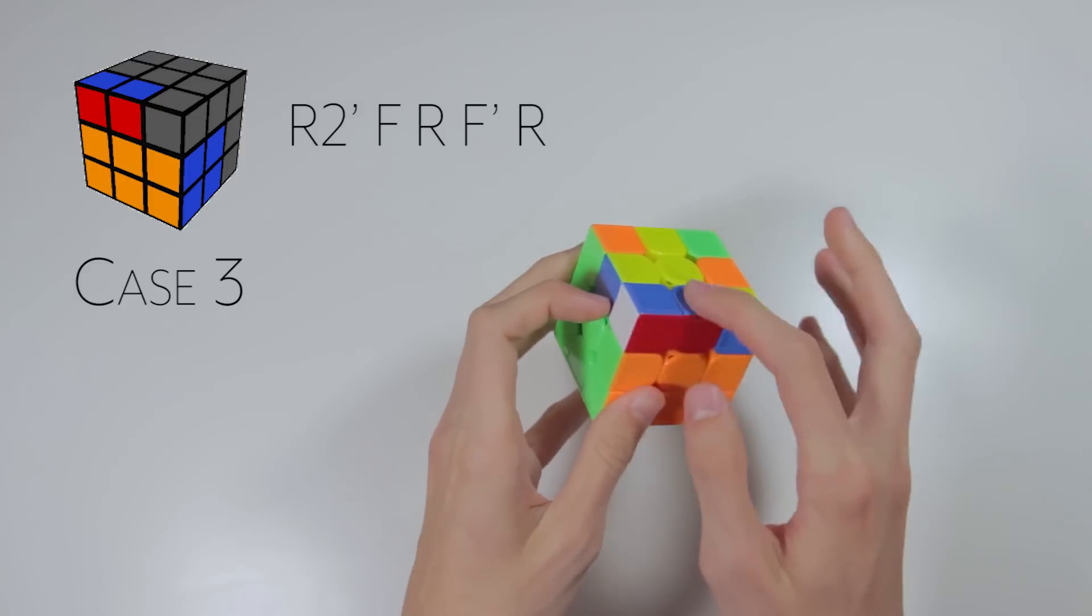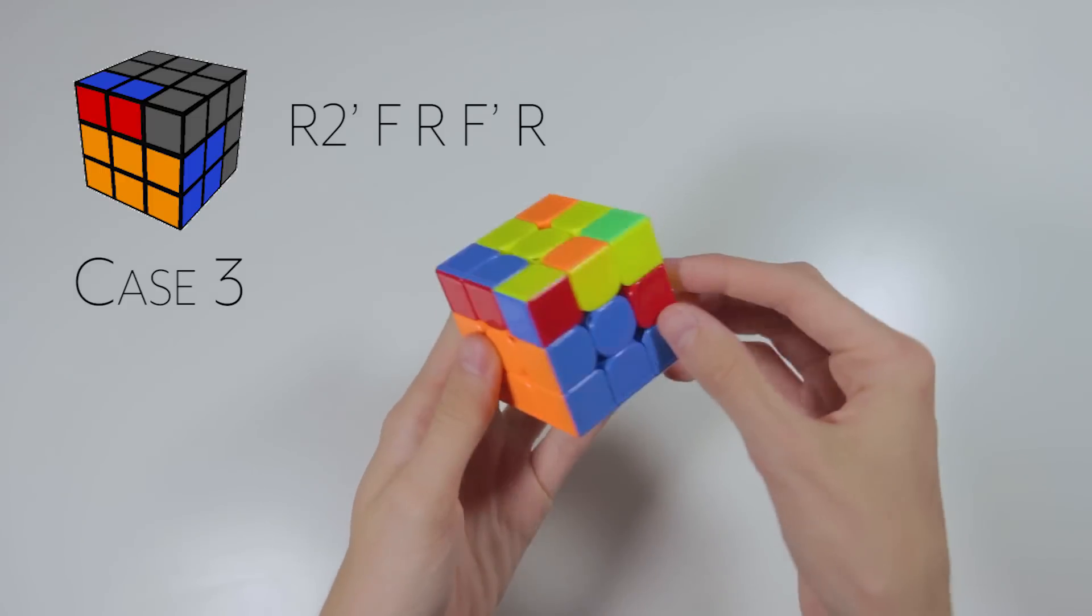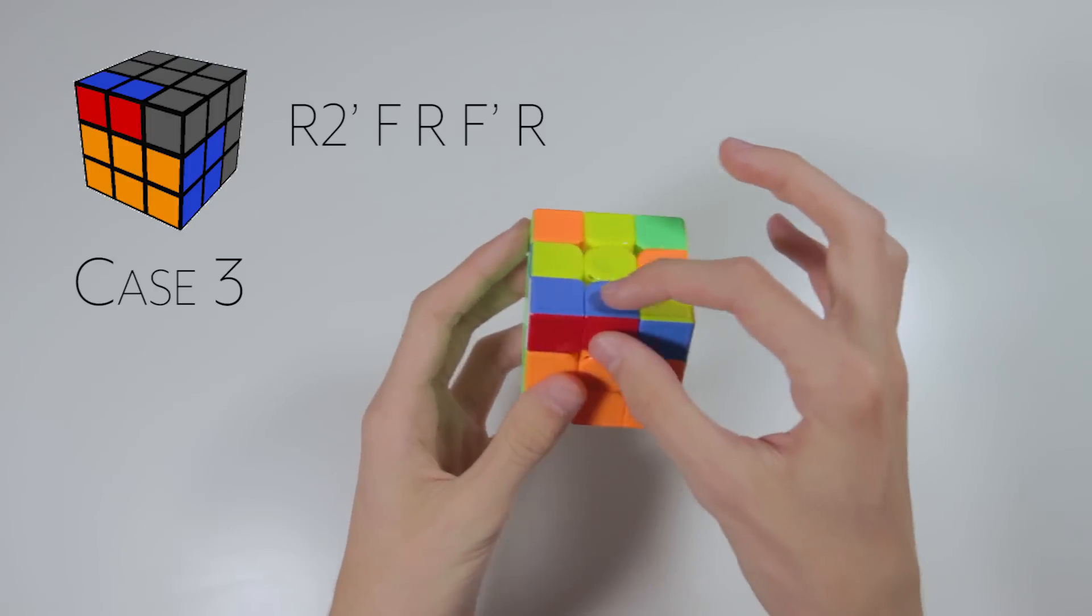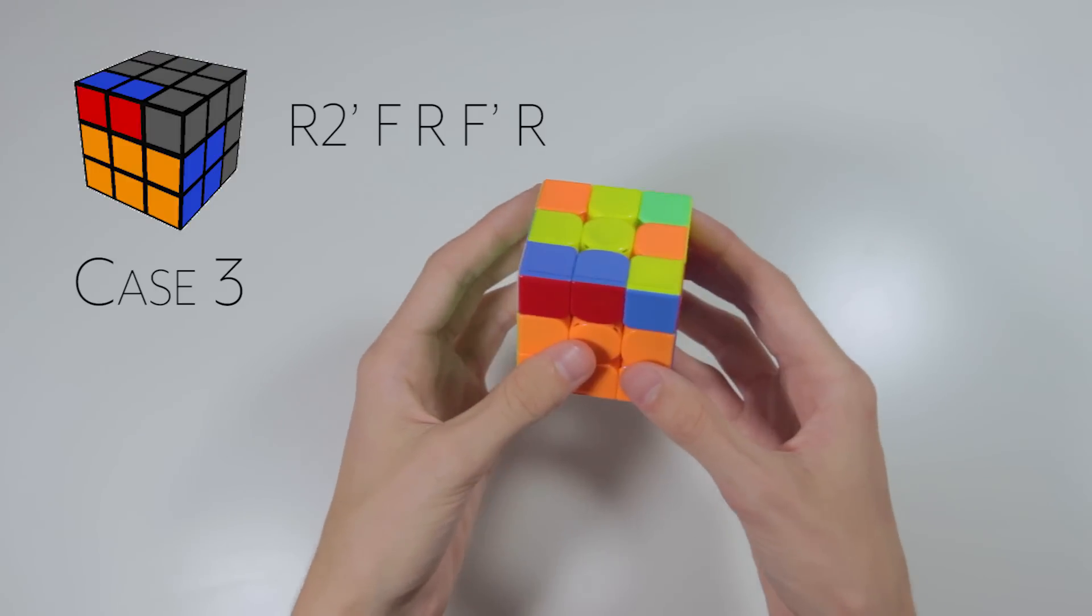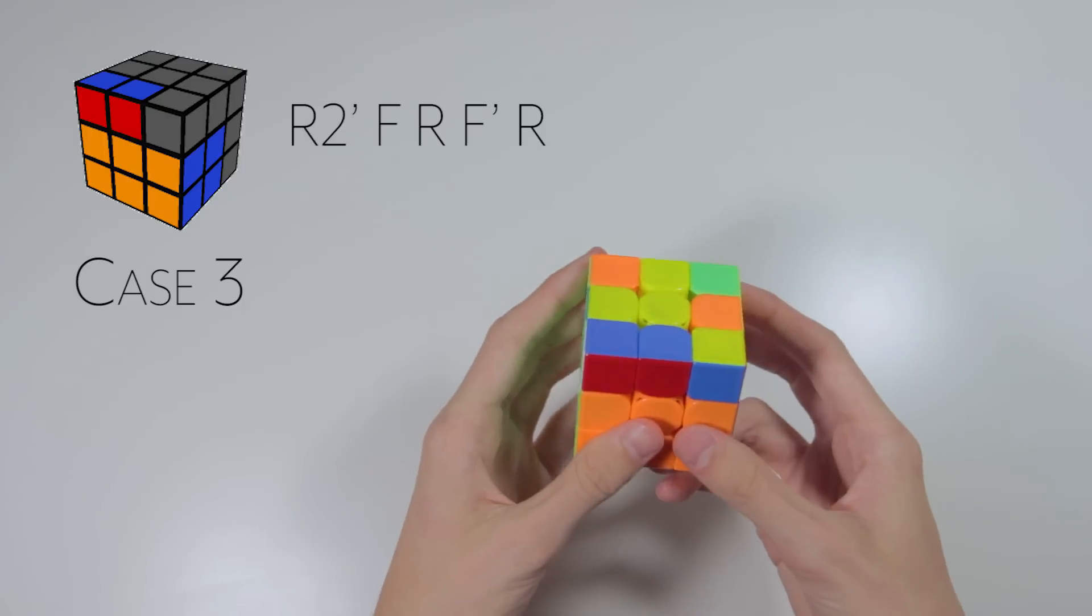This next case is a way to insert a pair like this in the back here without having to rotate. So with the empty slot back here and the solved pair right here, the algorithm looks like this. And quickly.